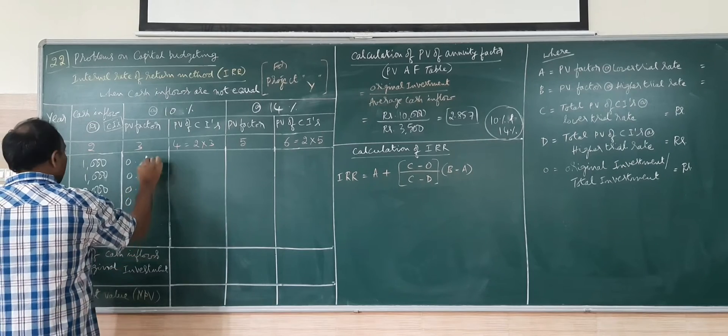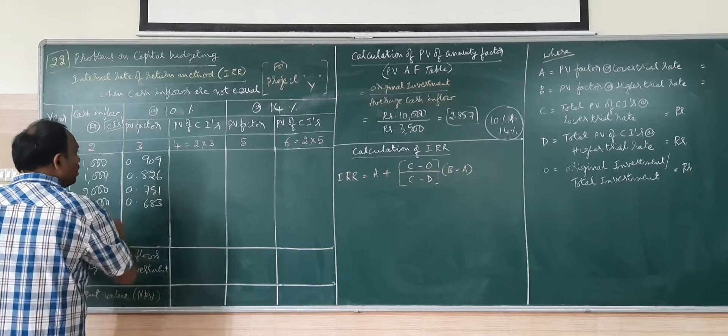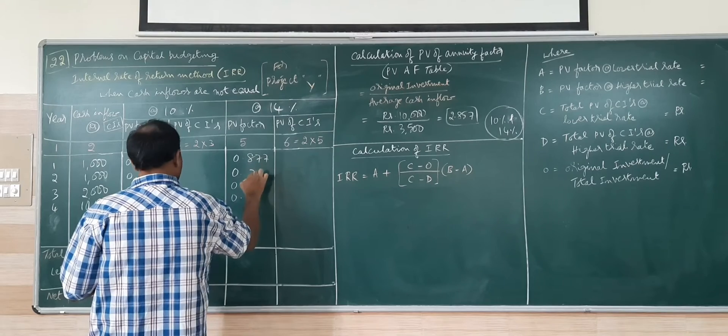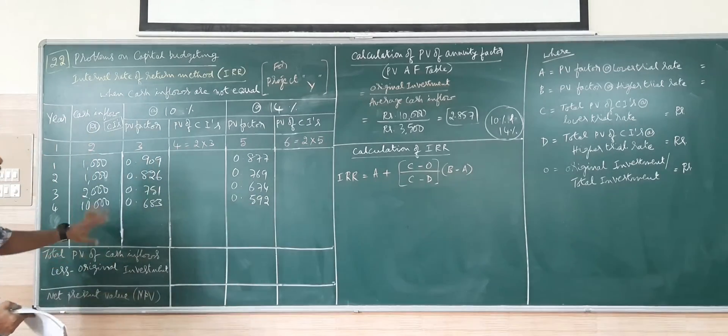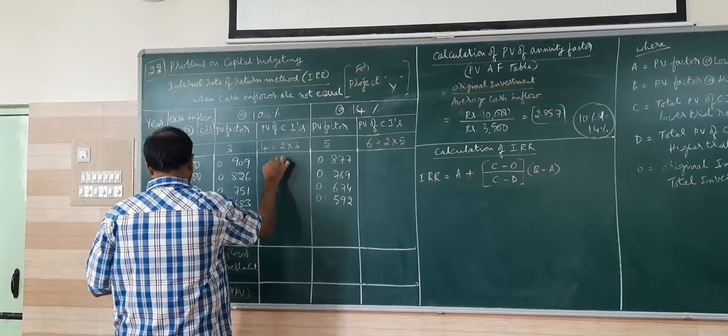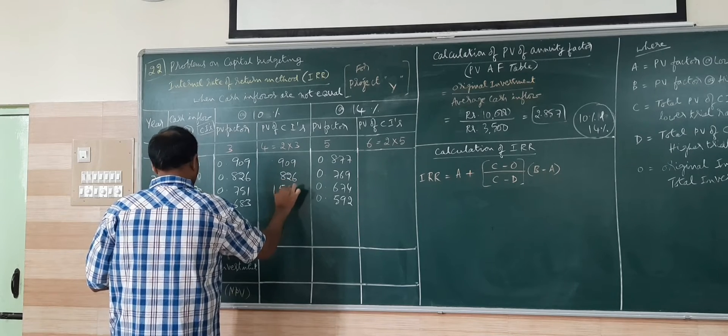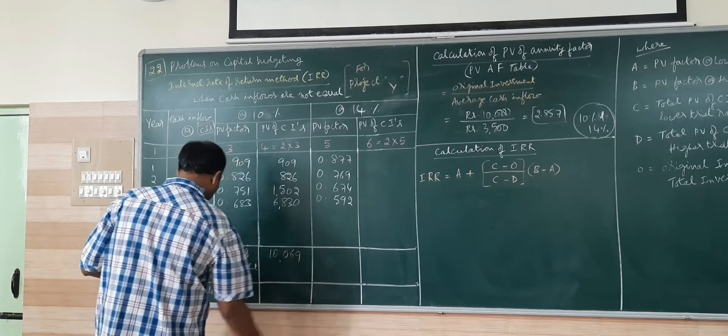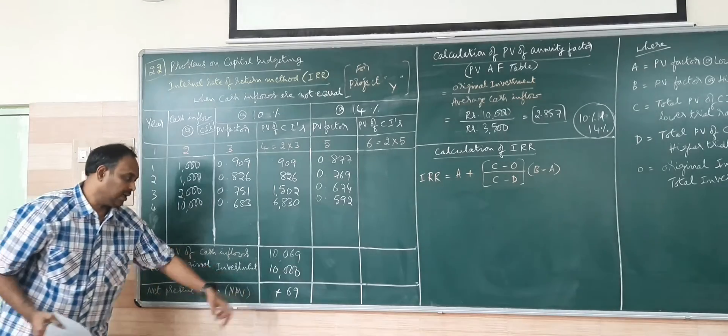PV factor at 10%, then PV factor at 14%. Sometimes both projects will have the same PV factor, sometimes different. That is why I take a different 10 and 14 here. I will multiply cash inflow into PV factor. We will work it out for 10%. 909, 826, 1502, 6830. Adding all I am going to get 10,069. Less initial investment 10,000. NPV is positive here at 10%.